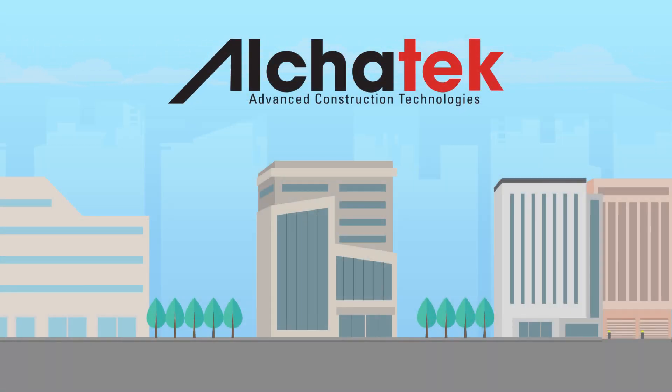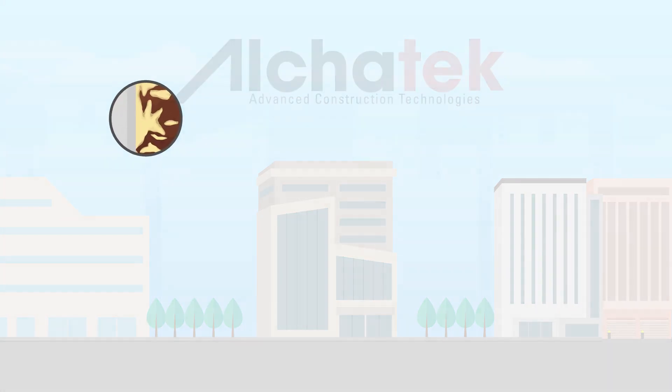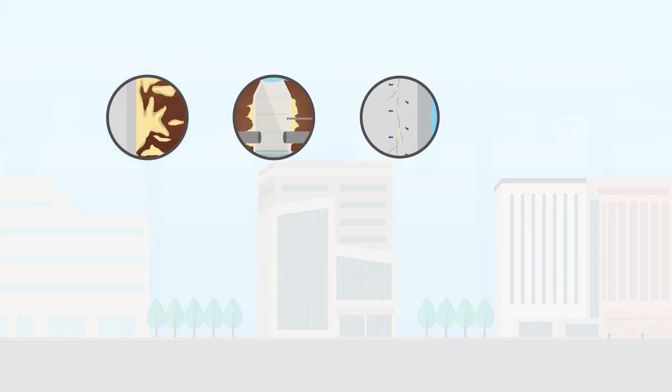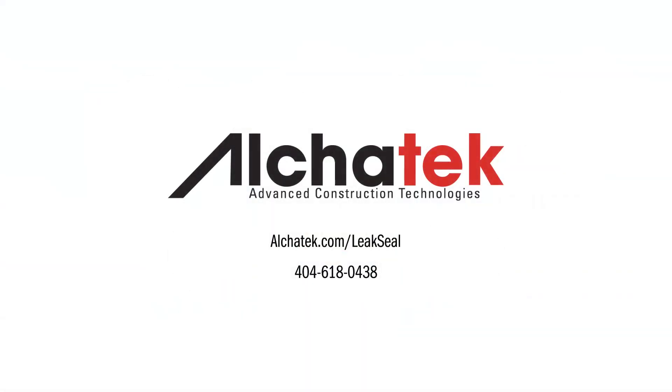Unlike most competitors, Alchatek offers unparalleled phone and on-site technical support to contractors applying these leak seal solutions. Whether you're preventing future leaks or stopping active leaks, you'll find the leak seal products you need at Alchatek. Call 404-618-0438 now or visit Alchatek.com/leakseal.